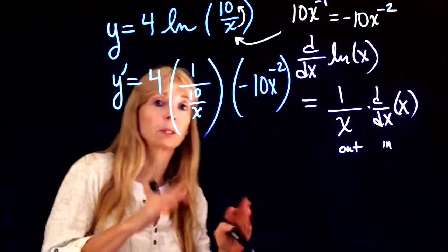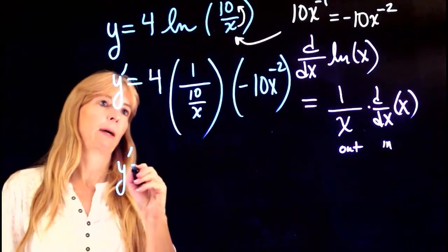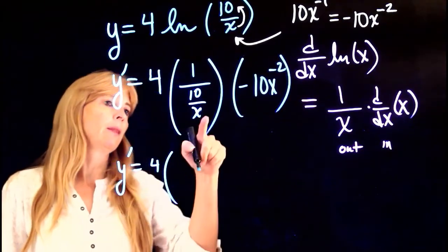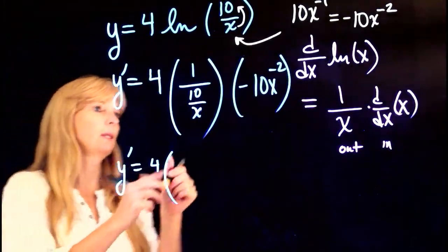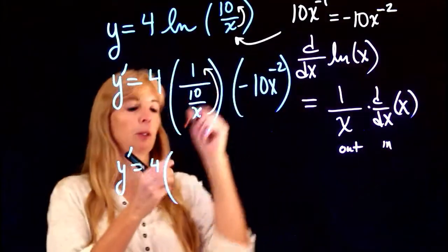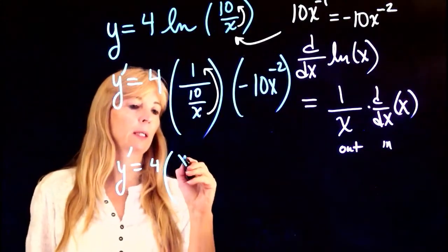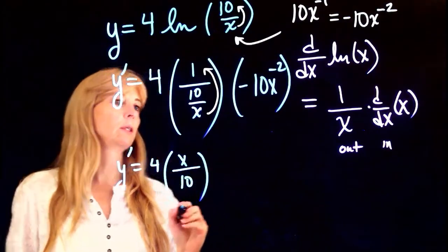So from here, I'm just going to rearrange stuff. My derivative for this piece—when this is in the denominator, that comes up to the top—so this becomes x over 10.